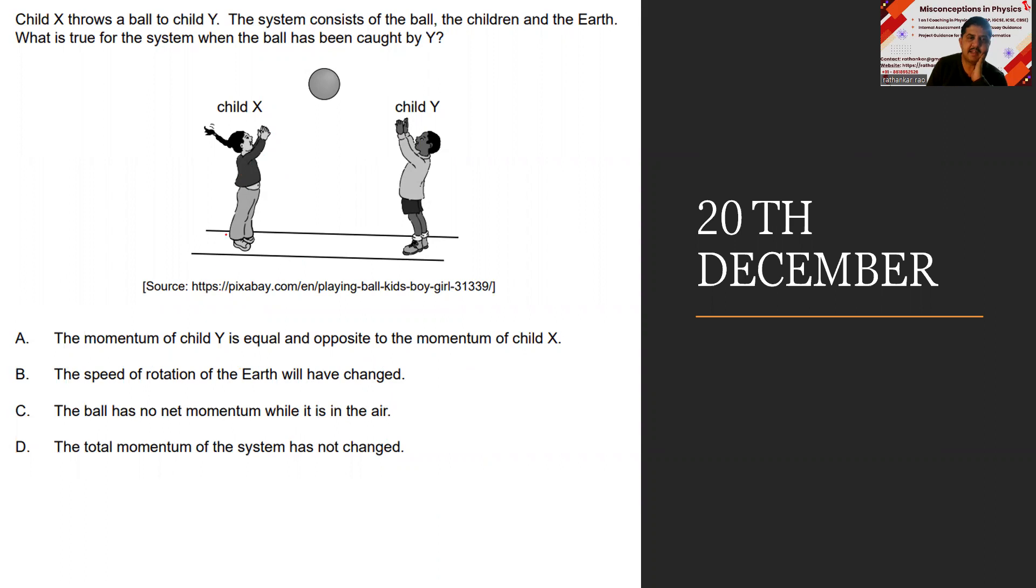What is the momentum of child X? The mass of the child is m. When he throws it, there will be a reaction, but later on this is not moving anywhere. The child is not moving, so as a result of it, this is incorrect.